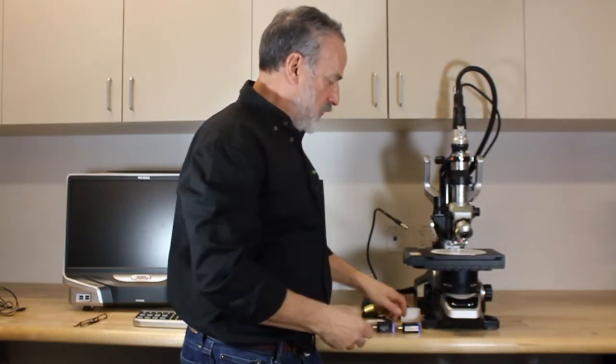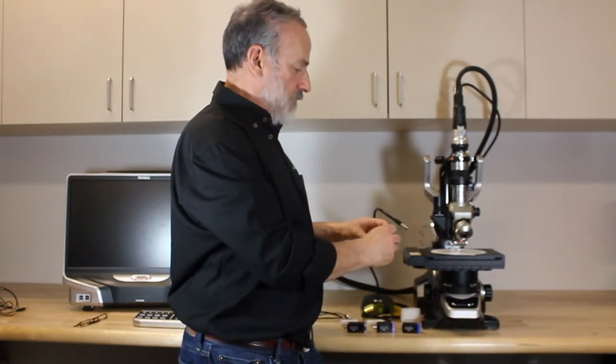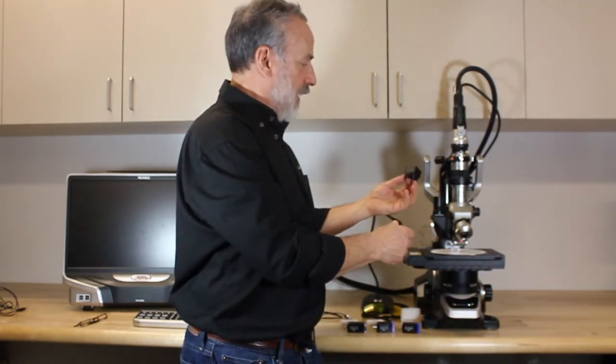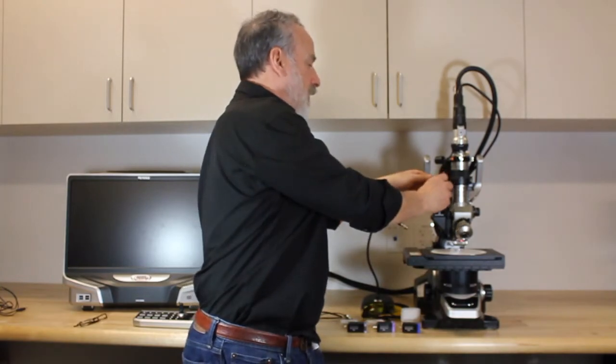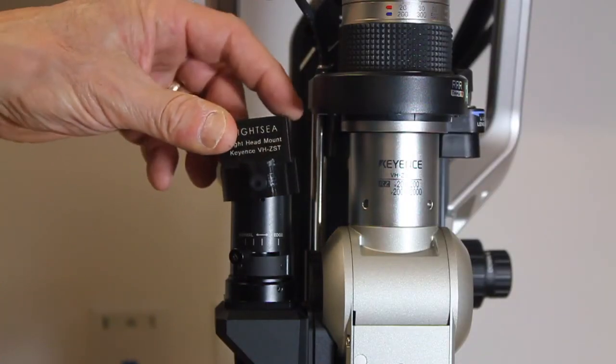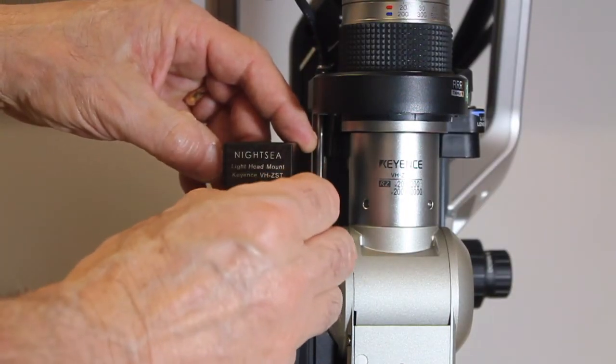In order to put the light source over the fiber input, we have a custom mount that just slips on over there and pushes down and just secure it very lightly with a thumb screw.